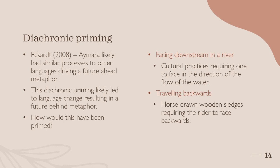As for specific situations in Aymara history which may have primed such an unusual metaphor, Eckerd draws attention to two in particular: facing downstream in a river, and travelling backwards. These scenarios may be specific to Aymara culture, such as cultural practices that involve facing in the direction of the water's flow, or horse-drawn wooden sledges that require the rider to face backwards. This unusual metaphor may then have been cemented through being continuously primed over many years.